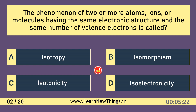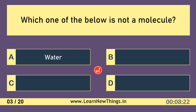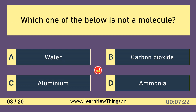The phenomenon of two or more atoms, ions, or molecules having the same electronic structure and the same number of valence electrons is called Iso-Electronicity.